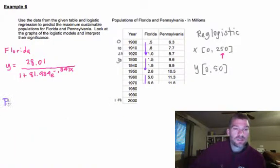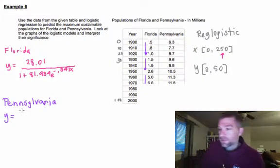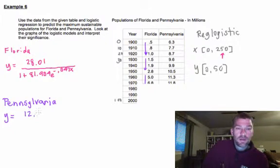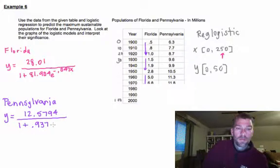In Pennsylvania, Pennsylvania is different. What I got for Pennsylvania is 12.5794 over 1 plus .937 times e to the negative .034x.